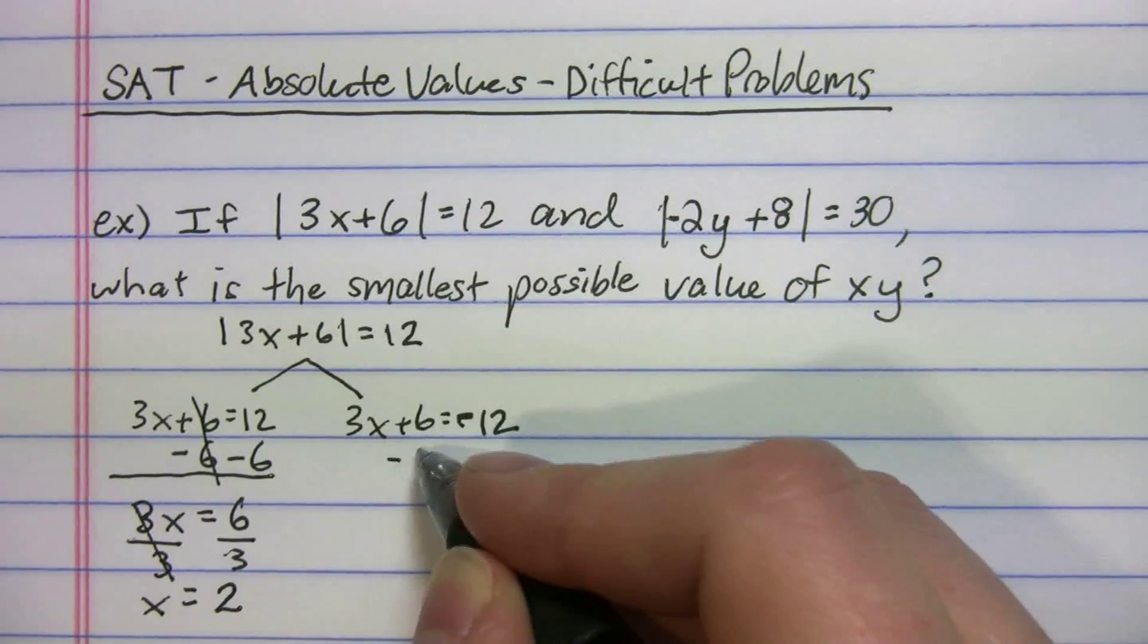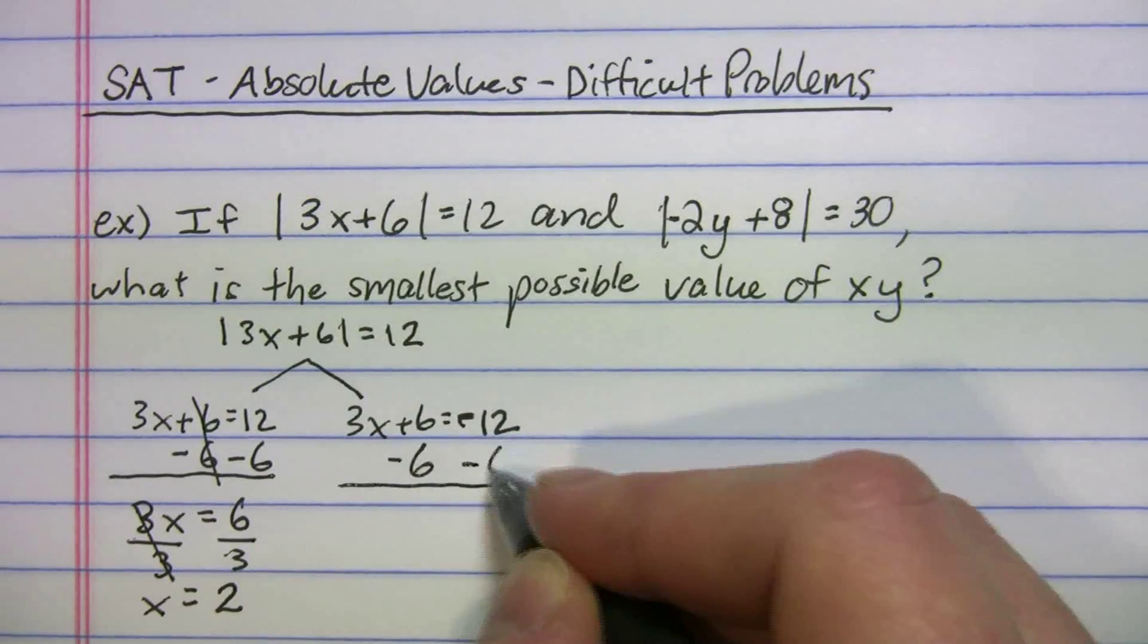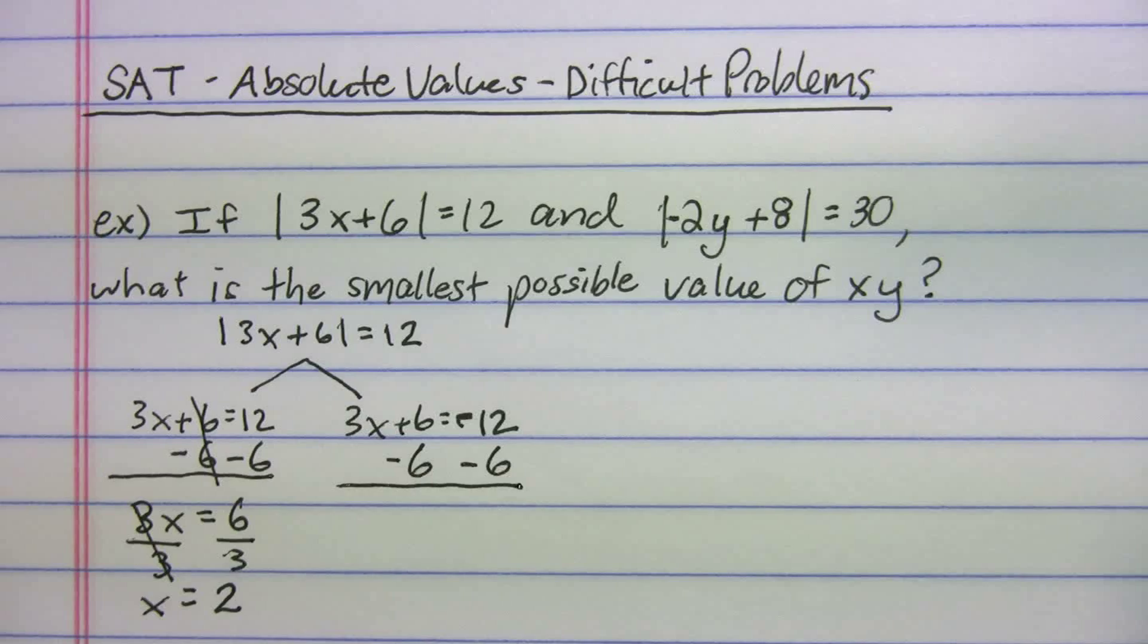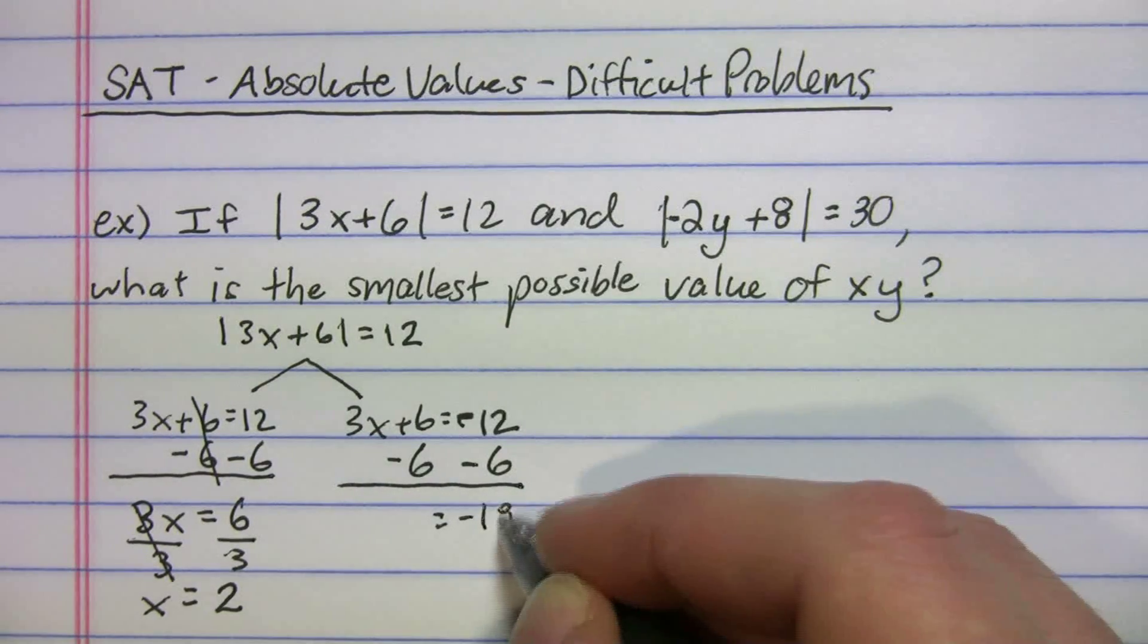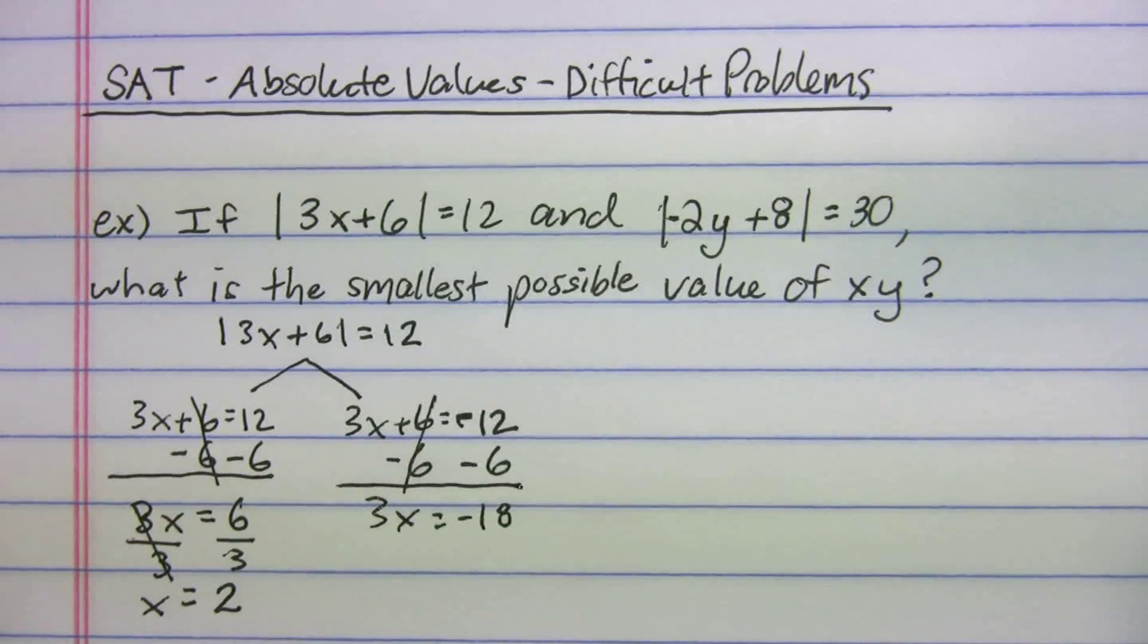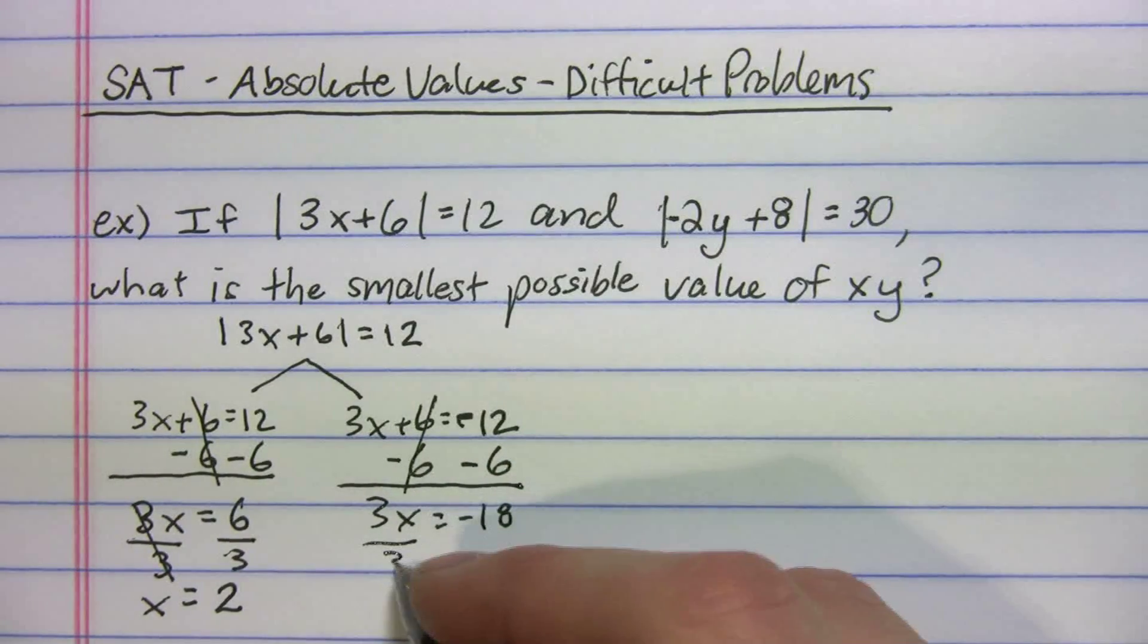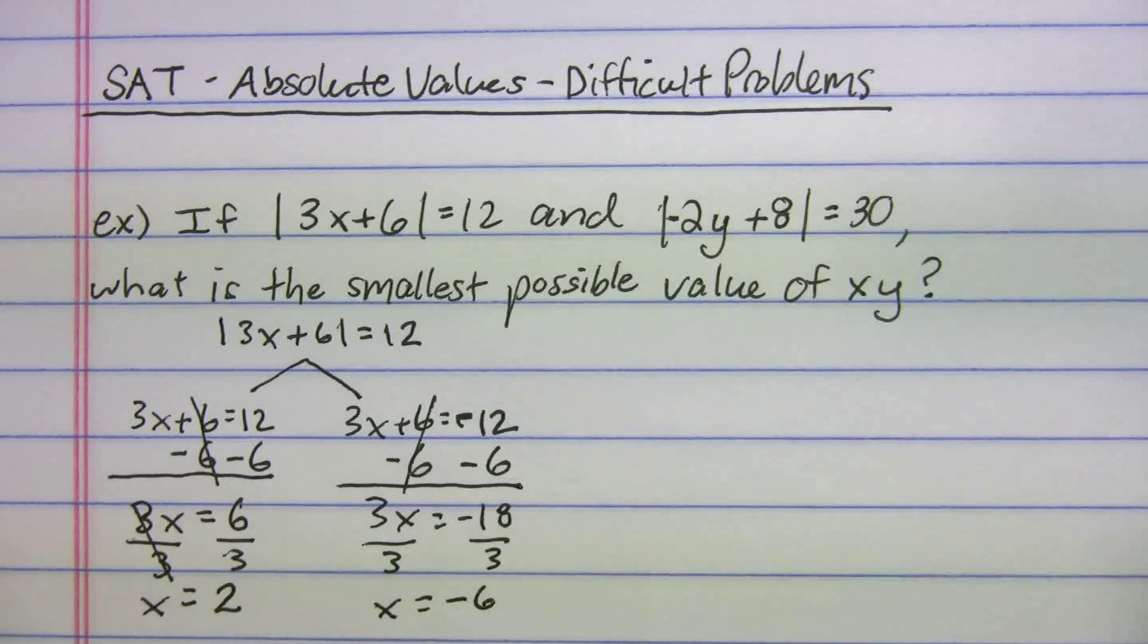Now for the other case, minus 6 minus 6. Negative 12 minus 6 gives us negative 18. 3x equals negative 18. Divide by 3, and we get x equals negative 6. So we have two values for x here.